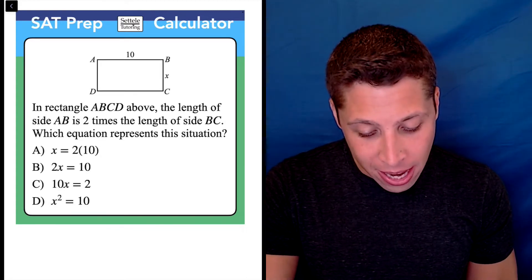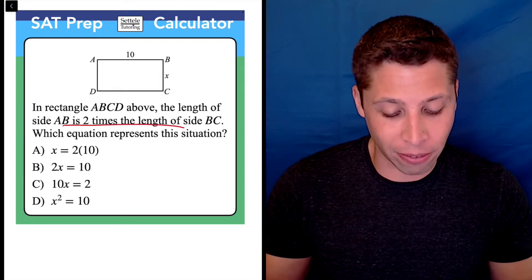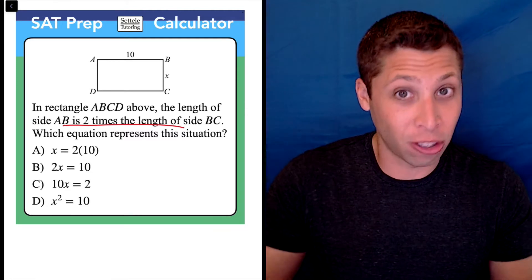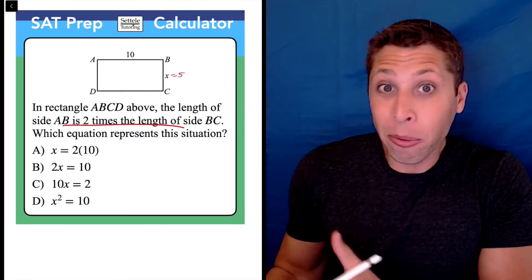They tell us that AB is two times the length of BC. So you can do this math in your head, right? If AB is 10, that's two times five. So now that we know that x is five,